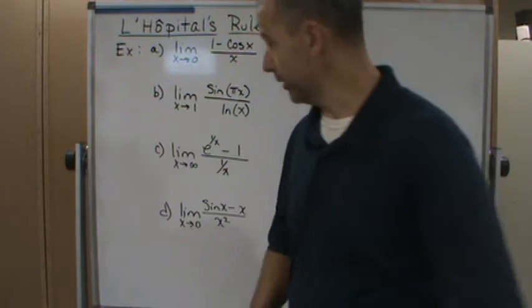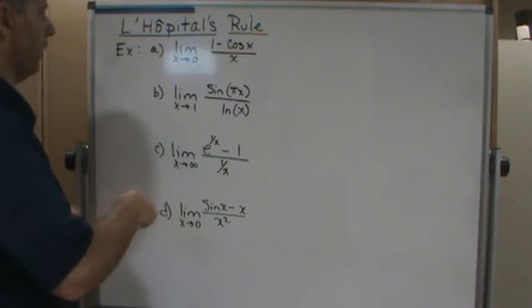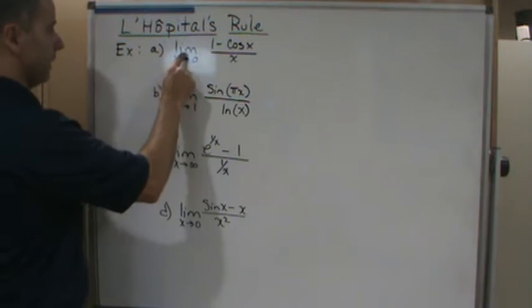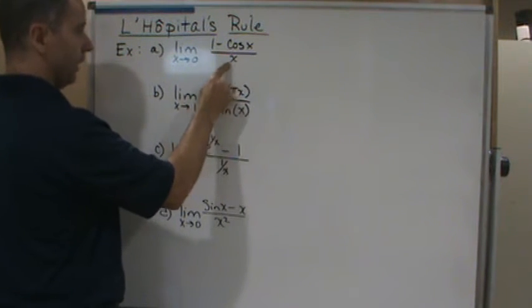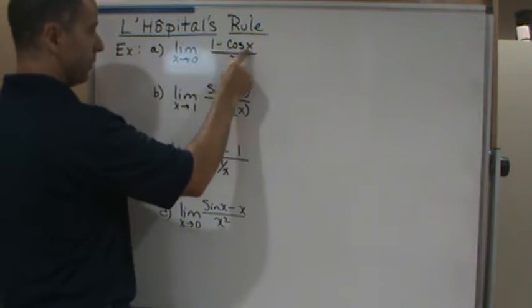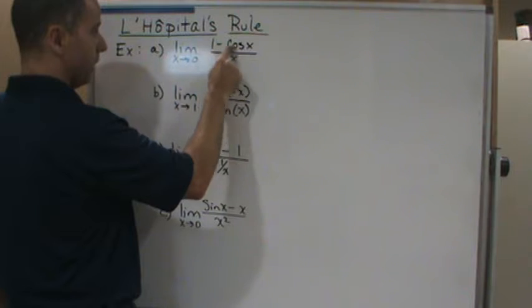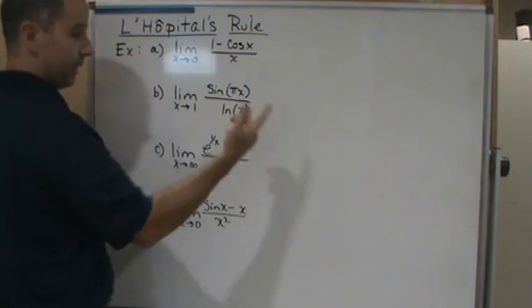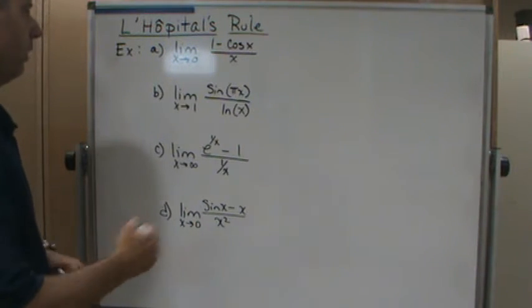So let's start. In the first one, we have the limit as x approaches 0 of (1 minus cosine x) over x. At 0, these are continuous, so this gives us 1 minus 1, which is 0, and we get 0 in the denominator. So we get the indeterminate form 0 over 0.